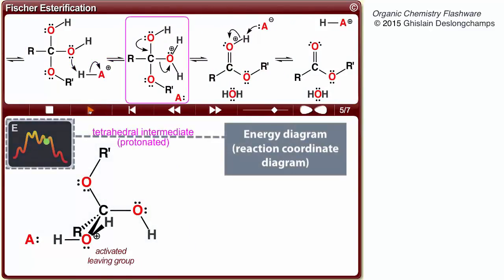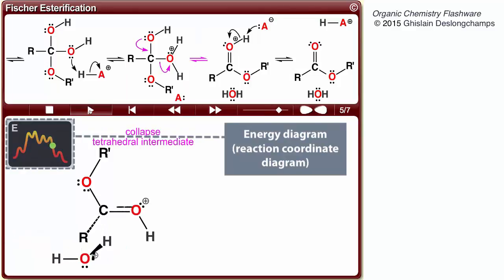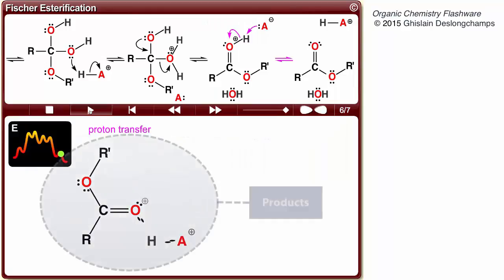The energy diagram, or reaction coordinate diagram, shows that a certain activation energy is required for each step. Reactions can be endothermic or exothermic overall.